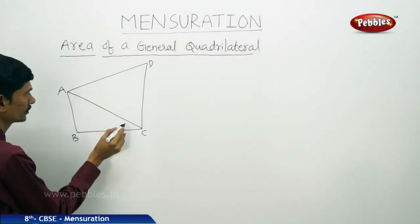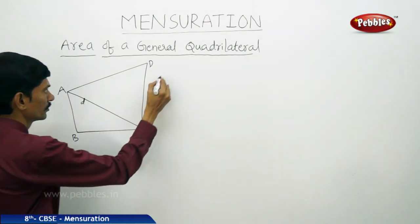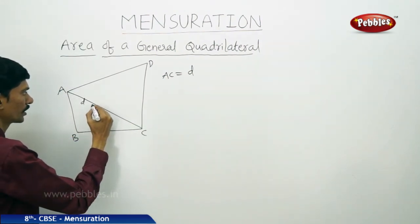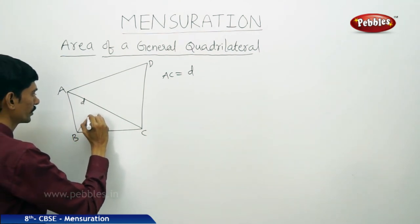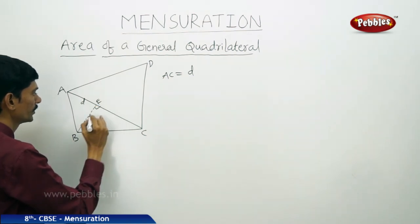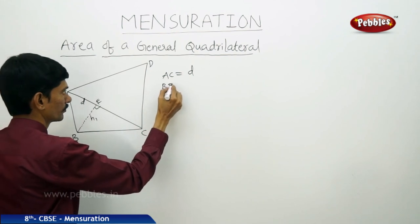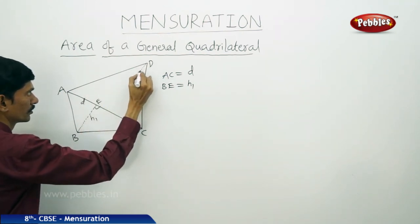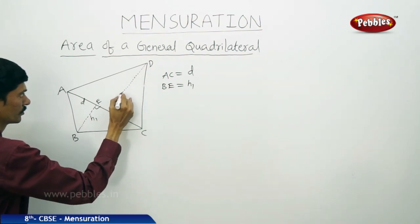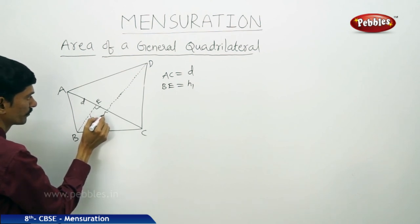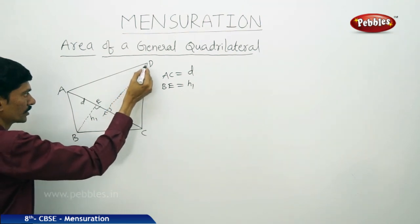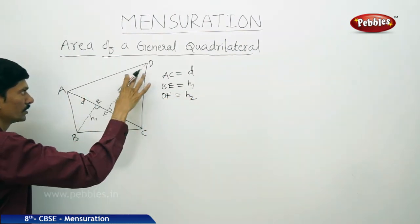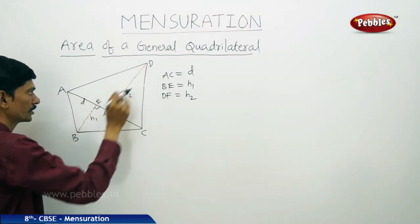Let the length of diagonal AC be d units. Draw perpendiculars from the opposite vertices to diagonal AC. From vertex B, the perpendicular is BE, let BE equal h1. From vertex D, the perpendicular is DF, where DF is perpendicular to AC; let DF equal h2. These are the perpendiculars drawn from the opposite vertices to the diagonal AC.